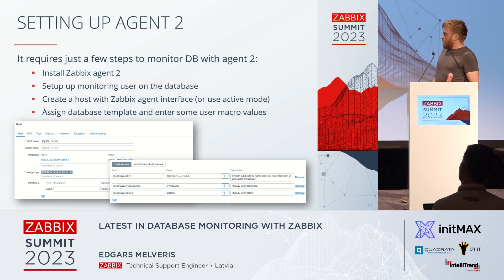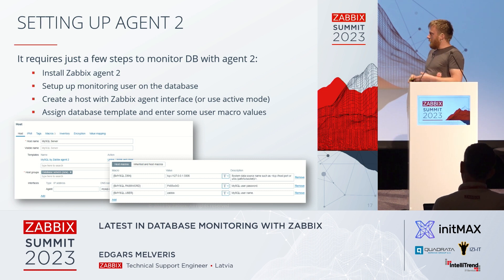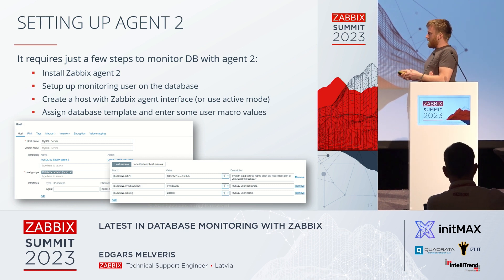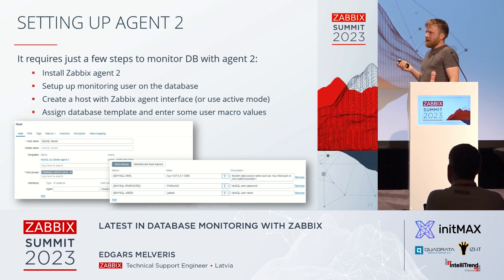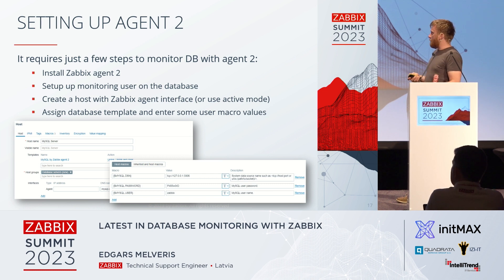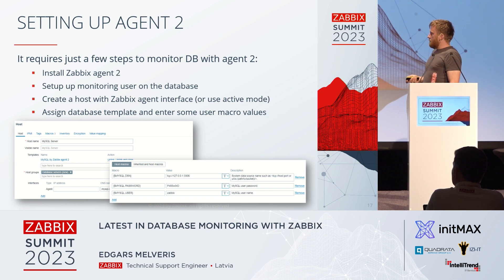How to set it up? In this case, no ODBC — the Agent itself knows how to communicate with the database. This is a Zabbix Agent built-in item. You need to install Zabbix Agent, prepare the database — maybe some user and permissions need to be set up, depending on the DB type. In Zabbix, you just create a host with an Agent interface. A big benefit is that you could also use Active Agent for monitoring, which depending on your environment might be the only option. Then assign the template, enter some macros, and you should be good to go.